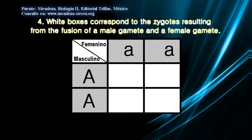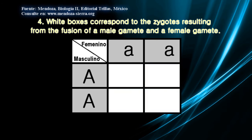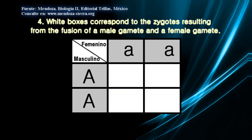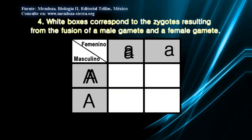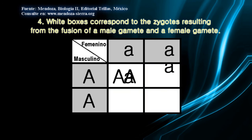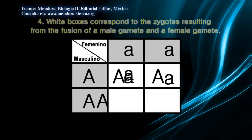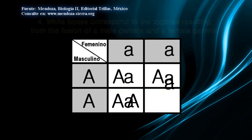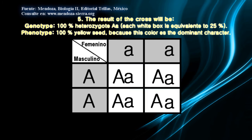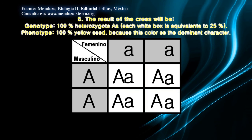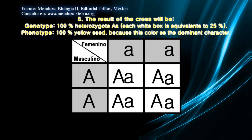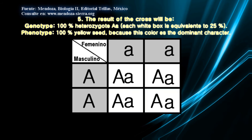Step 4: White boxes correspond to the zygotes resulting from the fusion of a male gamete and a female gamete. Step 5: The result of the cross will be — genotype: 100% uppercase A, lowercase a heterozygote (each white box is equivalent to 25%); phenotype: 100% yellow seed, because this color is the dominant character.